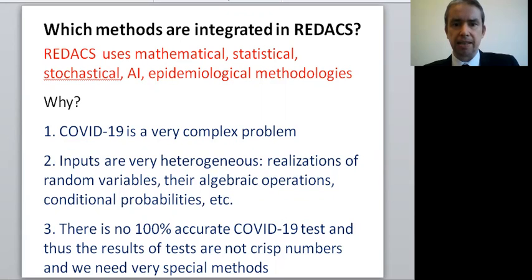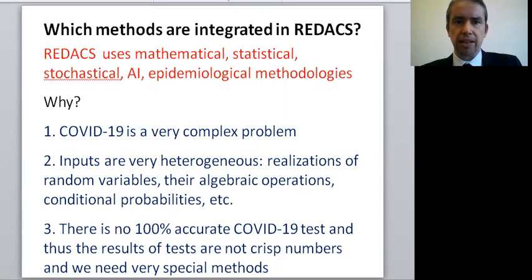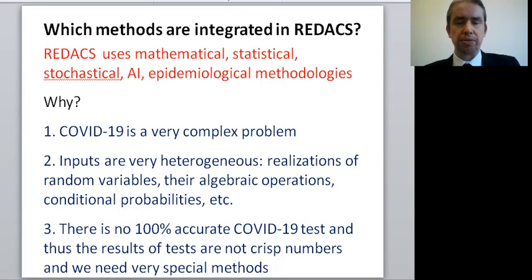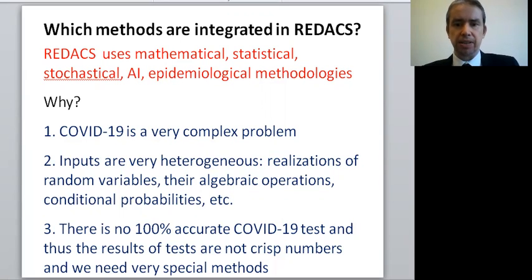Inputs are also very heterogeneous because almost all data are realizations of random variables — we don't have crisp numbers. Not only the random variables themselves, but also their algebraic operations and conditional probabilities are included, all of which come as inputs to Redux. One crucial example is that the COVID-19 tests used for screening and emergency diagnostic purposes are not 100% accurate, and the results of these tests require special methods to handle them correctly.